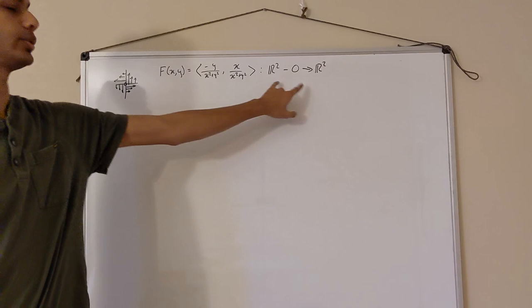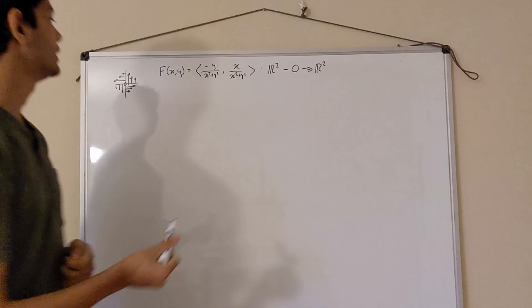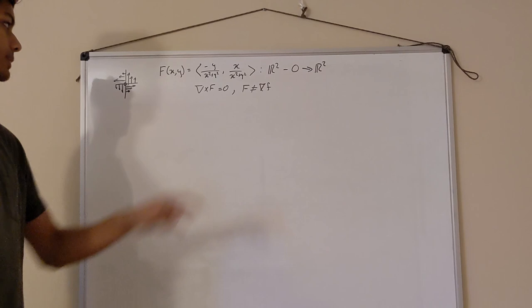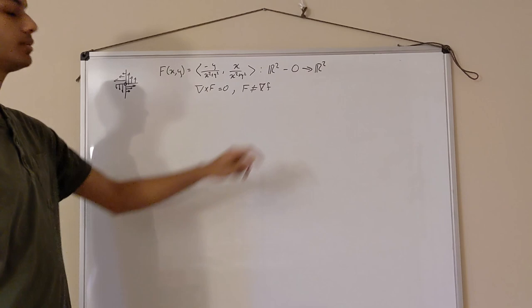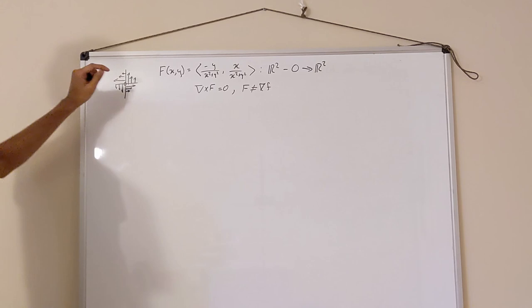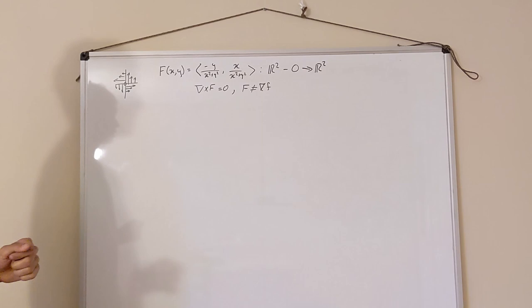Last time we were studying calculus on the space R² minus the origin and found this interesting vector field defined with the property that the curl of F equals zero, but F is not the gradient of any function. This was interesting because if F were defined on the entire plane, curl F = 0 would be sufficient for F to be a gradient. Visually, this function looks like a counterclockwise spiral around the origin — the arrows make an object move counterclockwise, but the arrows shrinking further away create a clockwise tendency, and these two forces counteract to make the curl exactly zero.